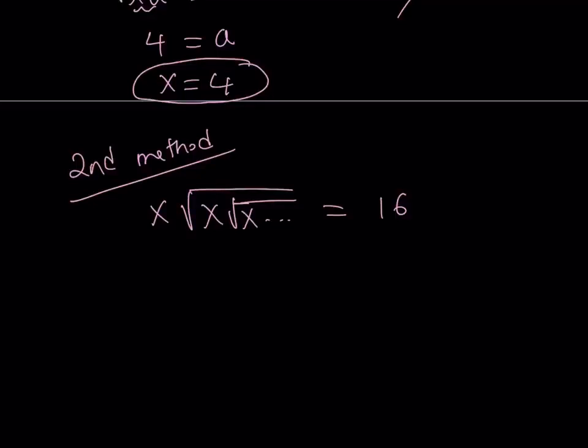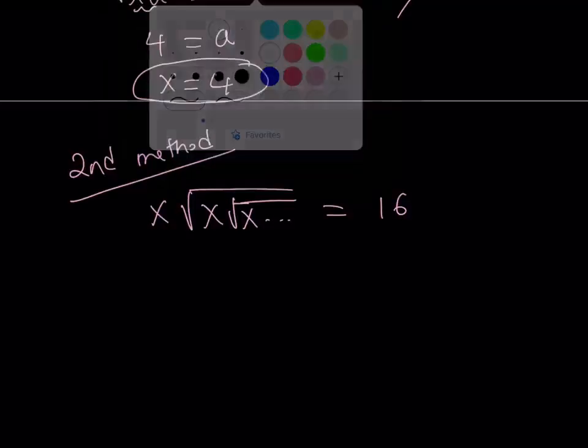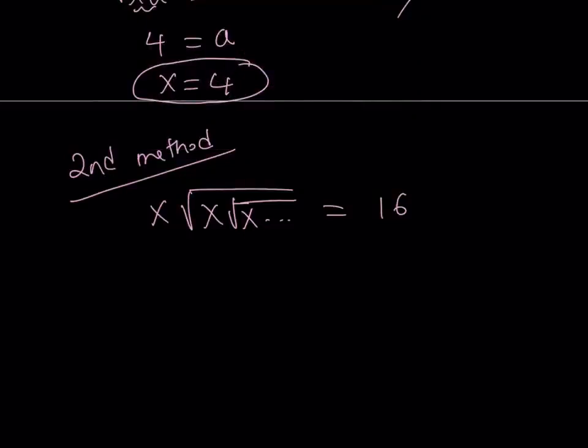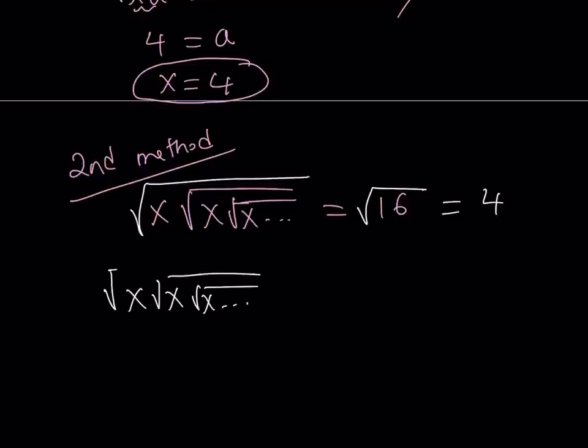The second method involves square rooting both sides. And the reason for that, the motivation behind it, is I want to make this more like a pattern. So if I take the square root of both sides, then I get something that I'm more familiar with, right? The square root of x times the square root of x times the square root of x. Something that repeats infinitely many times. And this is obviously equal to 4. Now, since this expression right here, the square root of x times the square root of x times the square root of x dot dot dot, is equal to 4.